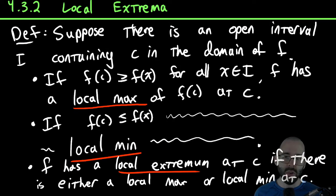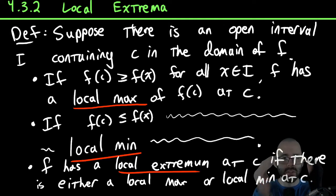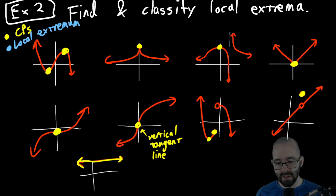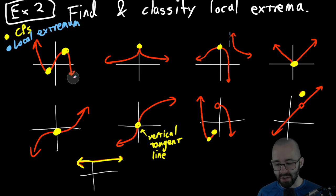Local max and local min are basically the same definition — it's just: is there some tiny open interval for which this is the biggest point? Let's look at this first function.